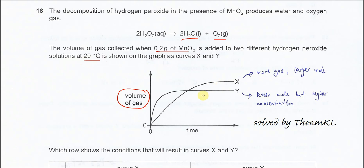From here we know that the Y initial rate is faster than X, but at the end the volume of gas produced is less. So we know that it must be less moles of H2O2 used, but initial concentration will be higher.